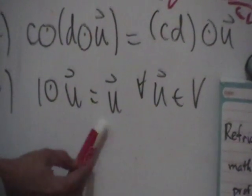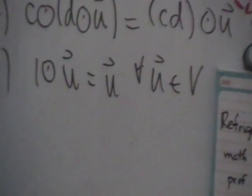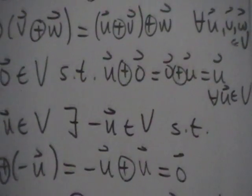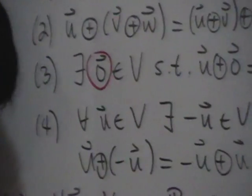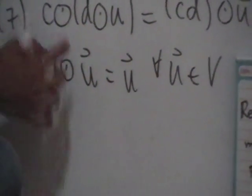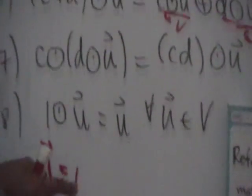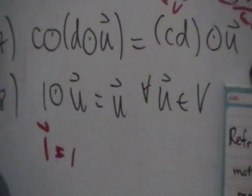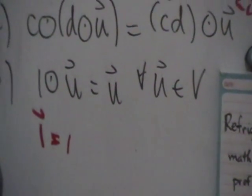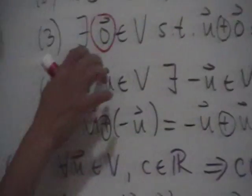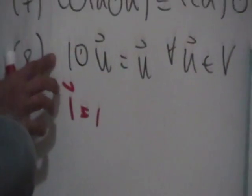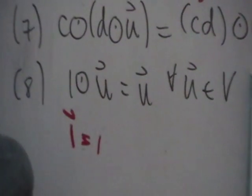Property eight says: 1 circle-times U equals U. This flags the identity element for circle-times. Recall that in property three we had the identity element for circle-plus, which we called the zero vector. For circle-times, the identity element is written as the number 1 — no vector notation — and it is always the number 1. The zero vector may look different in different examples, but the identity for circle-times is always 1.